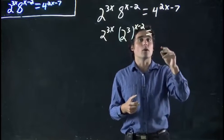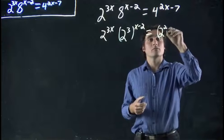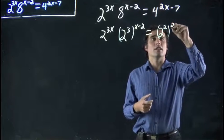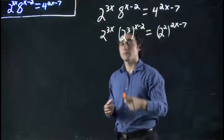But that's still raised to the power of x minus 2. And now we're going to do the same thing with 4. Rather than writing 4, I'm writing 2 squared. Still 4, it's just written in a convenient way for us.